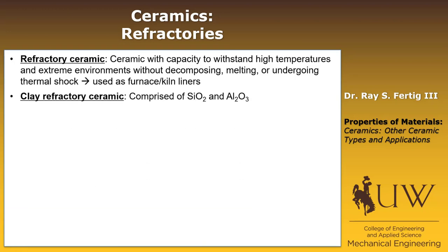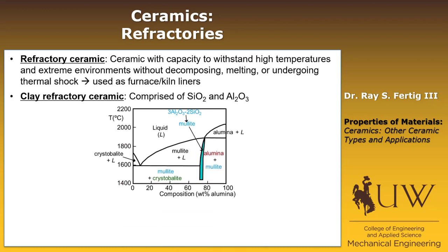Refractory ceramics are divided into two categories. One is called a clay refractory ceramic, composed typically of silicon dioxide (silica) and alumina. We can understand the refractory performance of these clays by looking at the phase diagram — weight percent alumina on the x-axis, temperature on the y-axis. There is a eutectic point at about 1,587°C where the composition will go through melting and convert from solid to liquid.